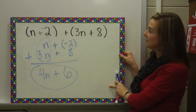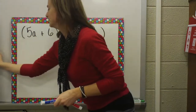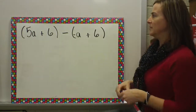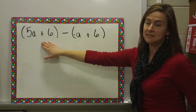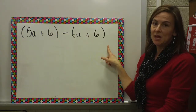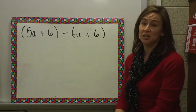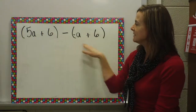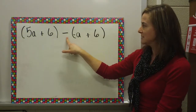Let's take a look at another example — make sure you have all the steps shown on your notes page. In the next problem, here are two expressions: we have five A and six minus a negative A and six. Remember that in the first step, we want to change any subtraction to addition. So since I am subtracting the two expressions, I am going to change this.